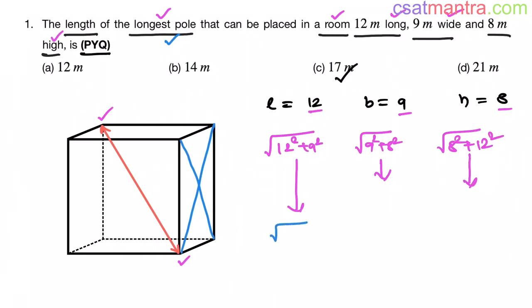The value of 12² + 9² is 225. The value of 9² + 8² is 145. The value of 8² + 12² is 208. So 145 is the shortest, 225 is the longest, and 208 is the medium-sized face diagonal.